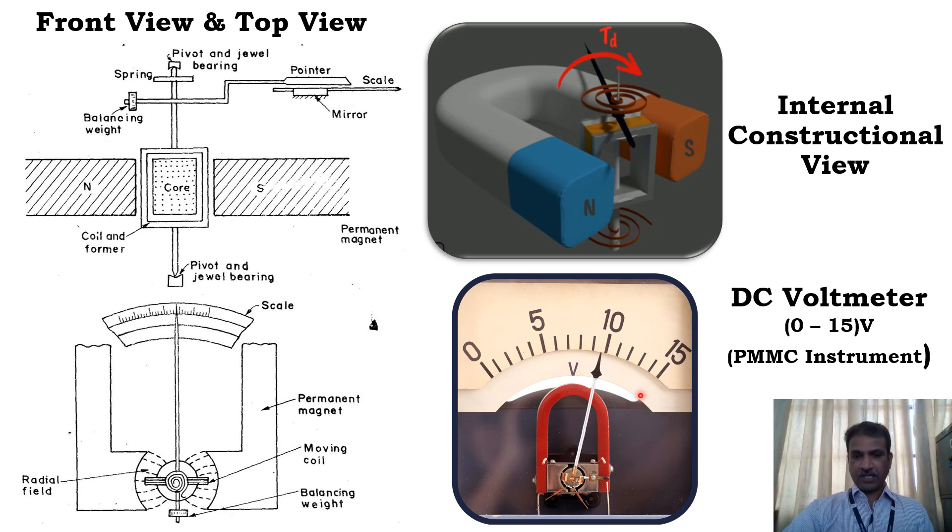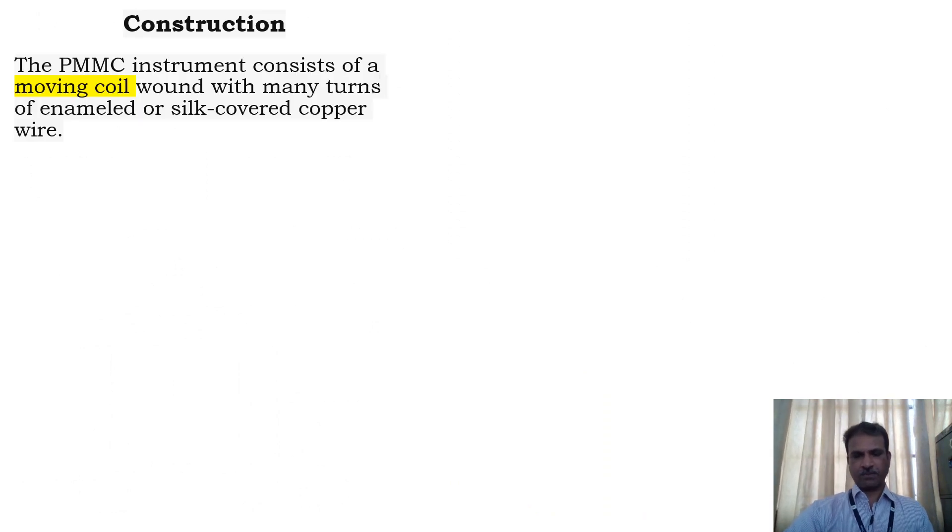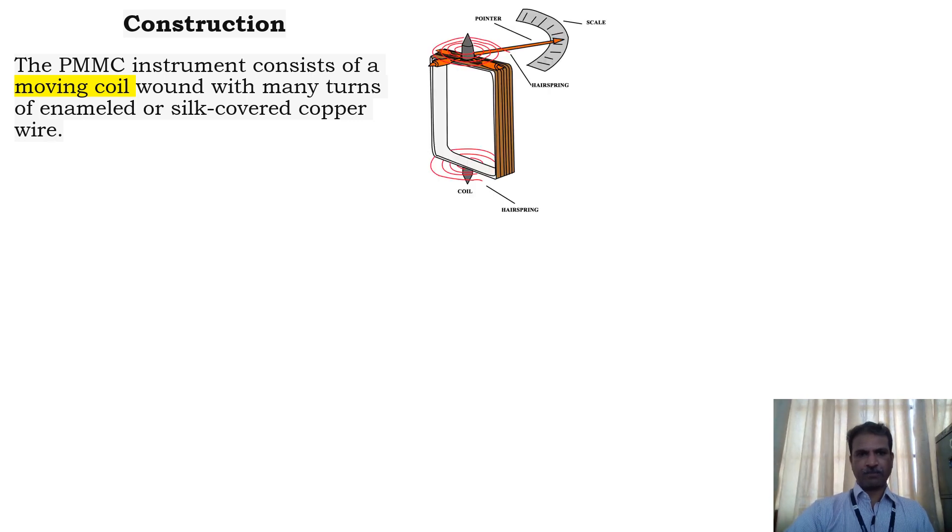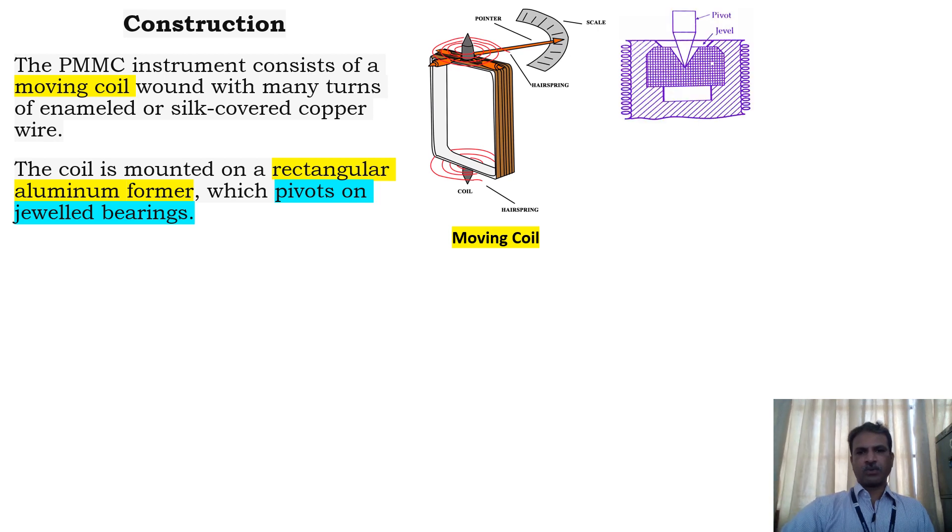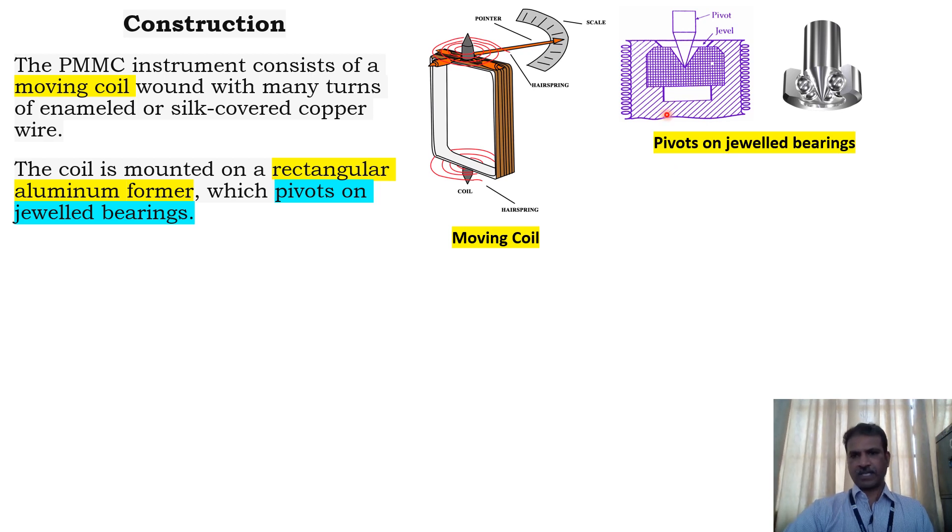Let's see the construction of the PMMC instrument. The PMMC instrument consists of a moving coil wound with many turns of enameled or silk-covered copper wire. The coil is mounted on a rectangular aluminum former which pivots on jeweled bearings. You can see it on the top right corner here.